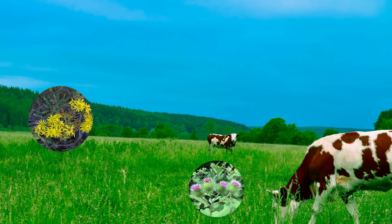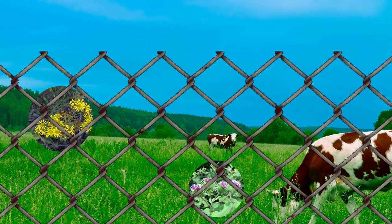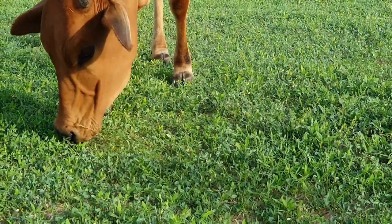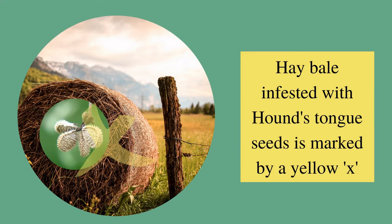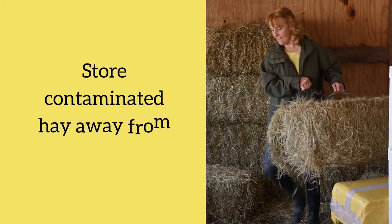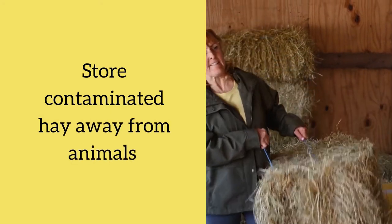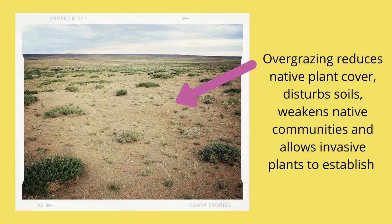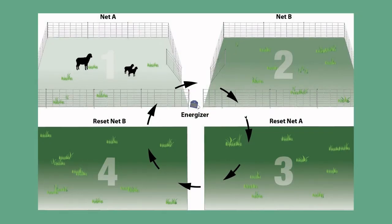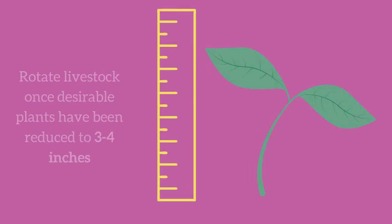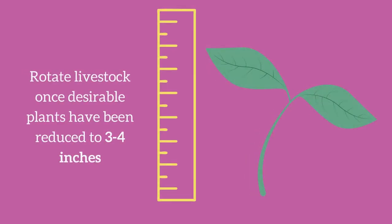If you have toxic invasive plants in your pasture, consider temporarily fencing off the infested areas to prevent accidental ingestion until the infestation can be managed. Isolate and label contaminated hay, and store it away from animals that are sensitive to its toxicity. Do not overgraze your pastures. Practice rotation to allow desirable plant recovery. A good rotation schedule is to move livestock to another field when desirable plants have been reduced to 3-4 inches.